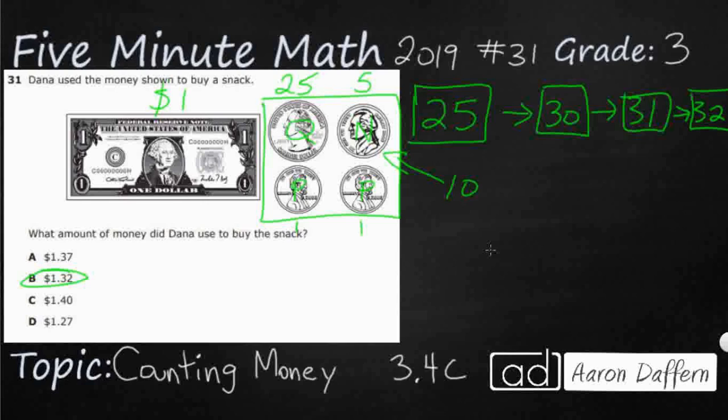well, now we can skip count 25. Skip count by 10 is going to get you 35. And then we're going to get 36, and then we're going to get 37. And so that's how we get A, is this incorrect value of that nickel.